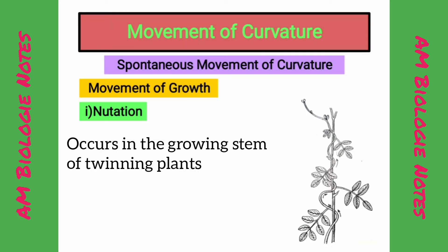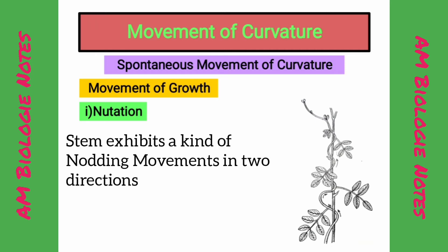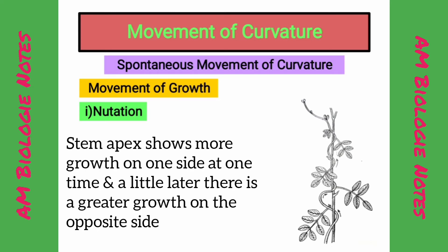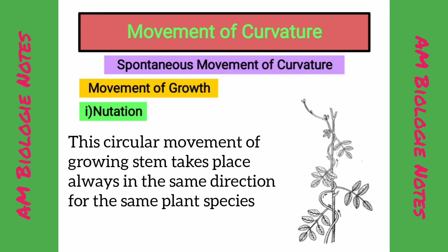Nutation: These movements occur in the growing stem of twining plants. The stem exhibits a kind of nodding movements in two directions, as the stem apex shows more growth on one side at one time and a little later there is greater growth on the opposite side. This circular movement of the growing stem takes place always in the same direction for the same plant species.